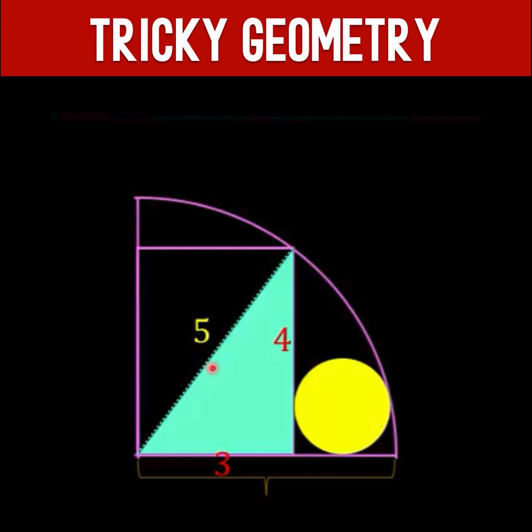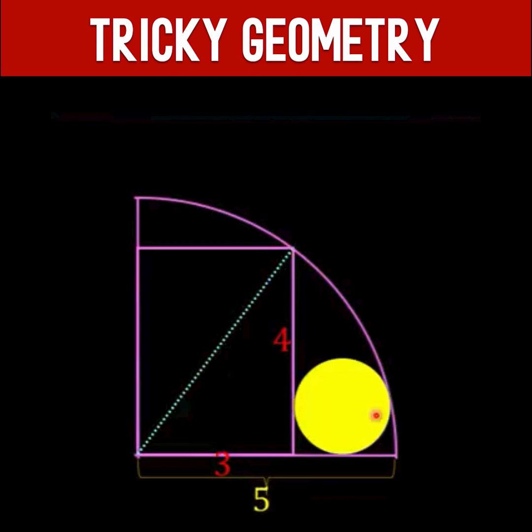Since radii of the same circle are equal then this length here must also be five units. Next let's locate the center of the yellow circle. This line segment is the radius of this yellow circle and let's denote it with small r. So that means this line segment here is also small r.